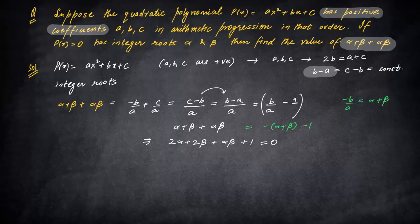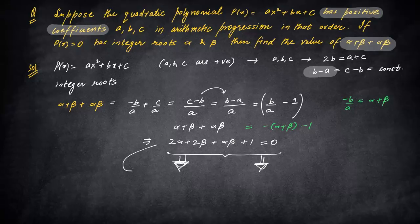We know that -b/a is α + β. Can you put this value back here? It will become -(α + β) - 1. And this equals α + β + αβ. Now if you solve both, this becomes 2α + 2β + αβ + 1 = 0. The reason I have taken this question is to explain how to solve this further. This is actually the most important part. I've seen most students struggle: what should be the next step after this?